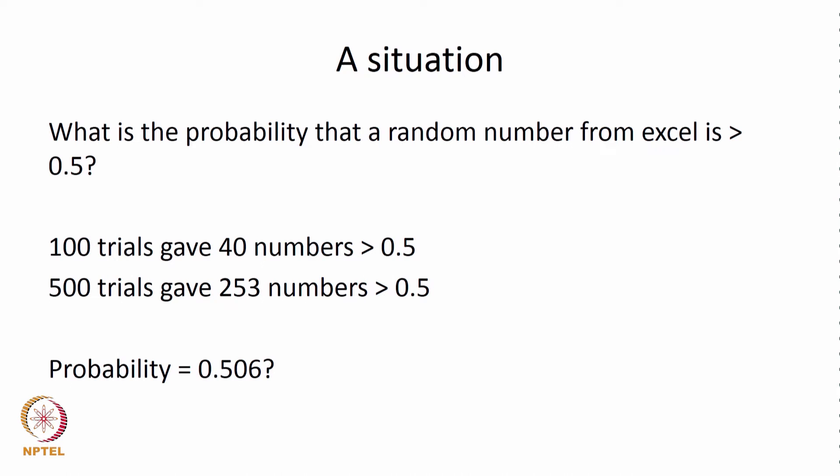What is the probability that a random number generated from an Excel sheet or a calculator is greater than 0.5? We did a small experiment: in 100 trials it gave 40 numbers greater than 0.5, but in 500 trials it gave 253 numbers greater than 0.5. So do we answer saying the probability is 0.5 or 0.506? If we did 1000 or 10,000 trials, we realize that 50 percent of the times the value is more than 0.5.